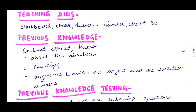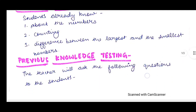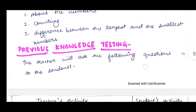Next, previous knowledge — what do students already know? Students already know about numbers, they are aware about numbers, counting, and the difference between the largest and the smallest numbers. They are able to figure it out, so when we make them understand the concept of ascending and descending order, previous knowledge testing — they already know this concept, so we will test their knowledge.